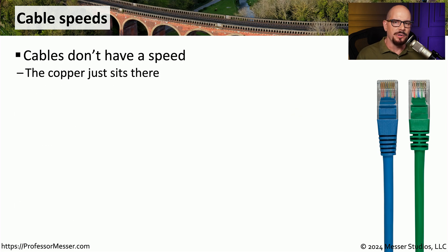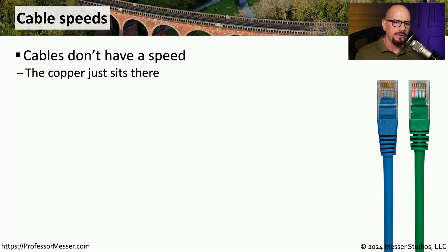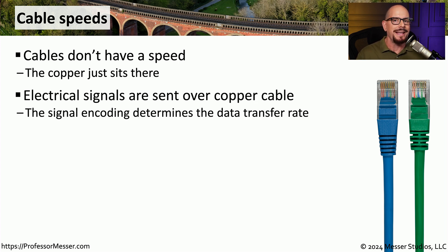One common misnomer I often hear about cables is that a certain cable has a particular speed. But in reality, the cable doesn't have any speed at all. The copper is literally just sitting there in the cable. The cable itself is supporting a signal, and that signal is allowing us to send a certain amount of data over that particular type of connection. The specific ethernet standard that you're sending over that wire determines just how much data you'll be able to move across that cable.